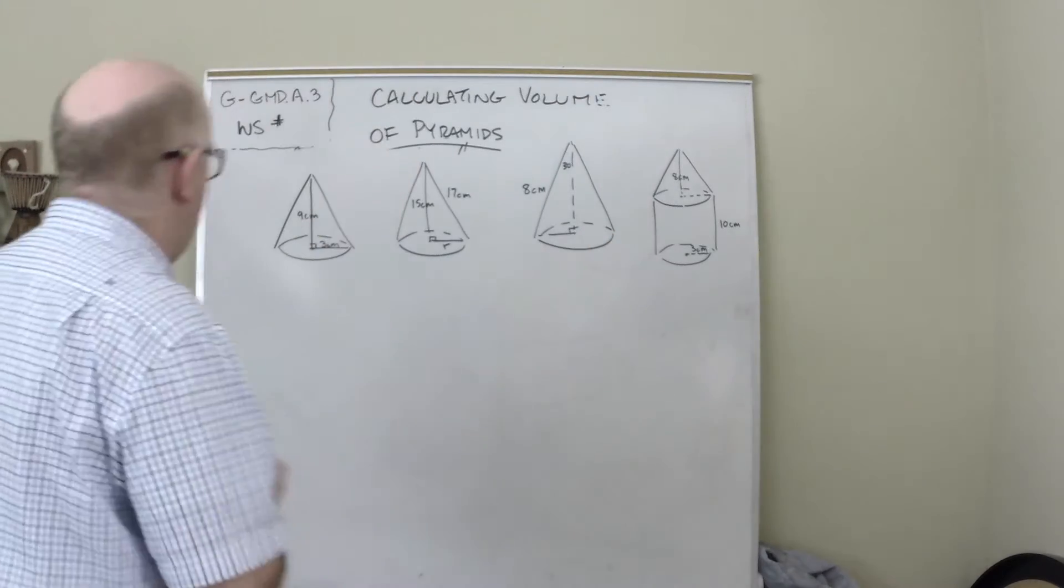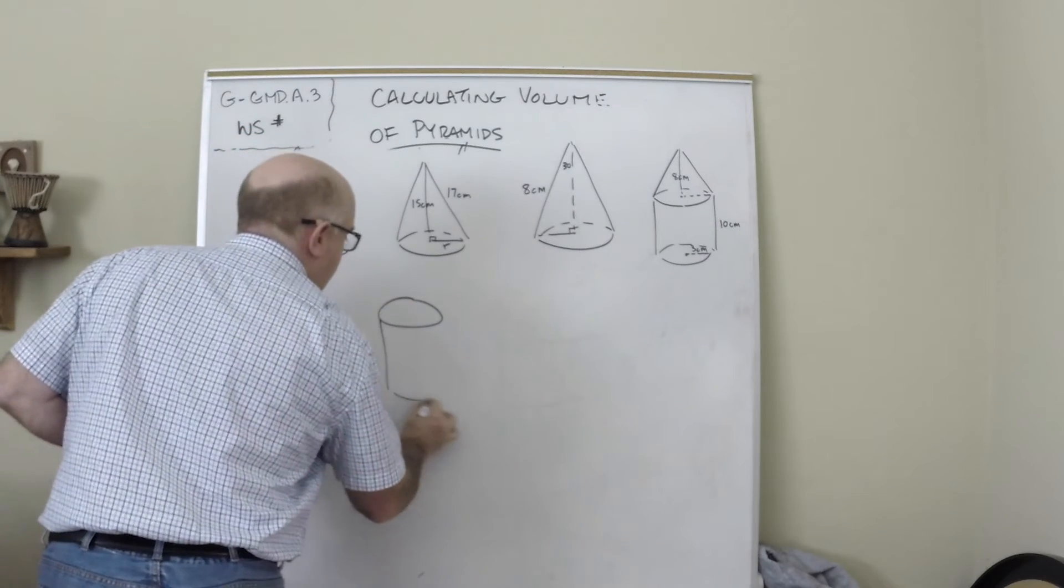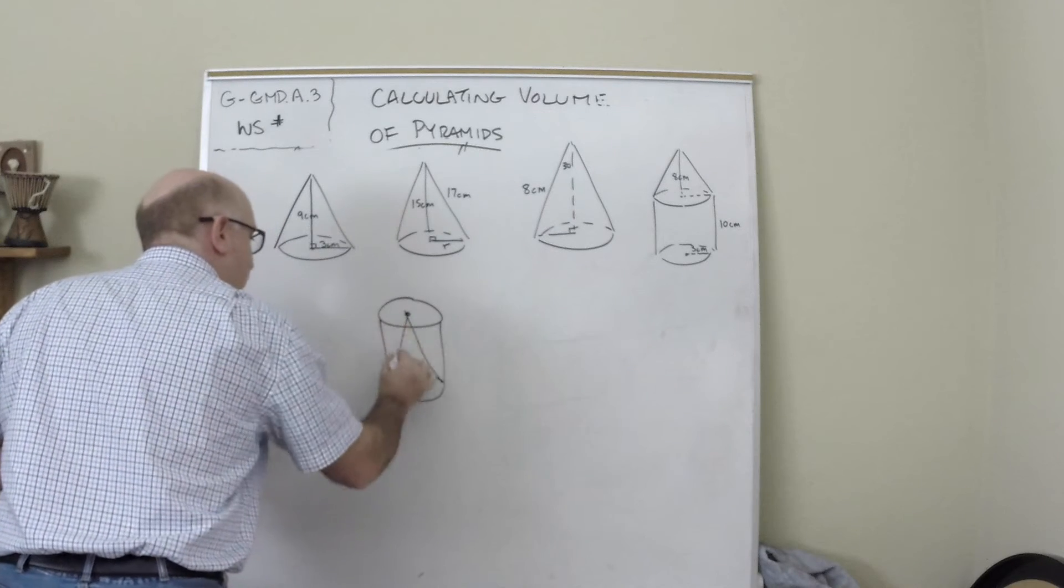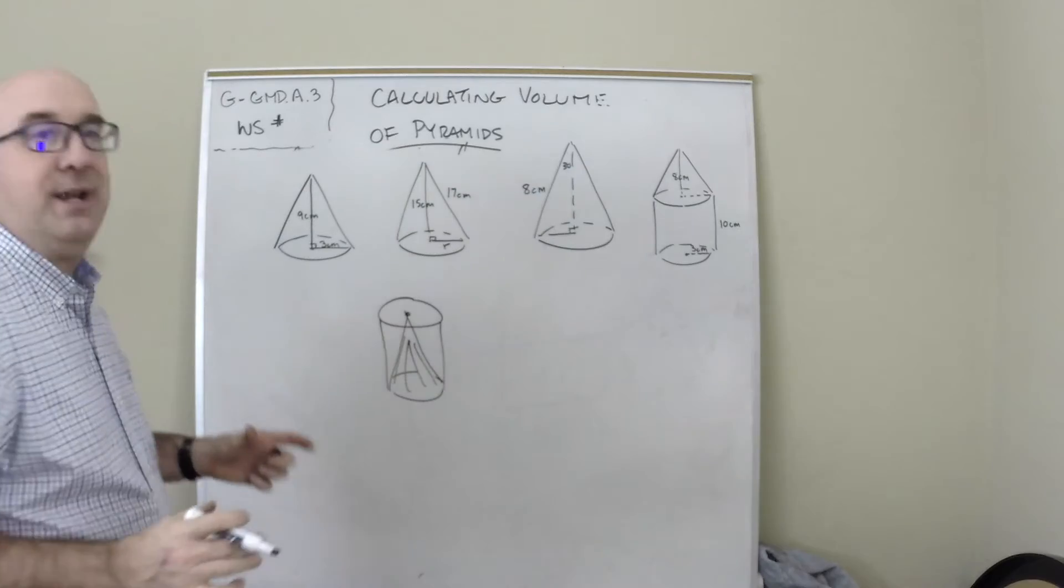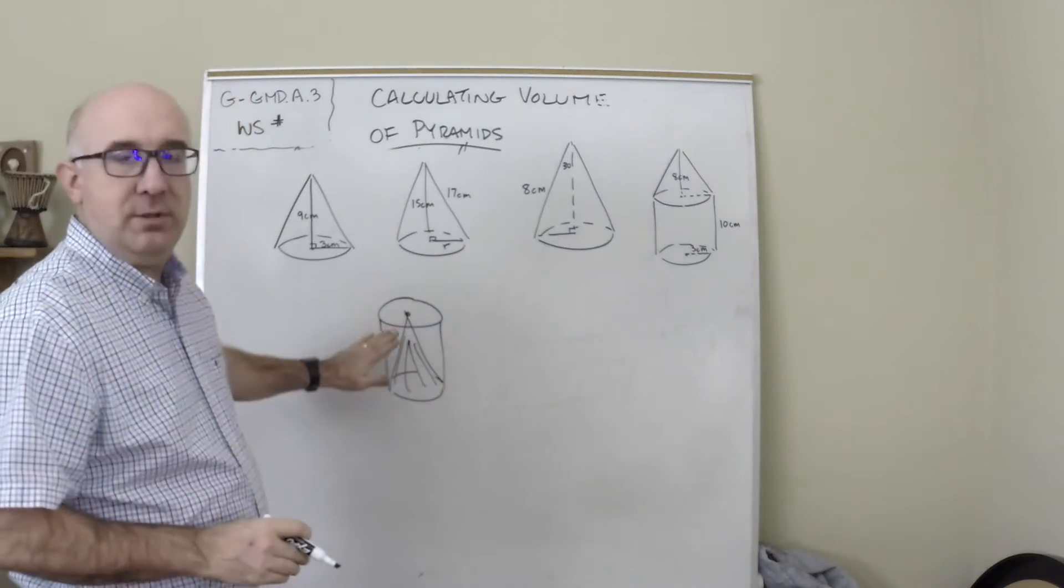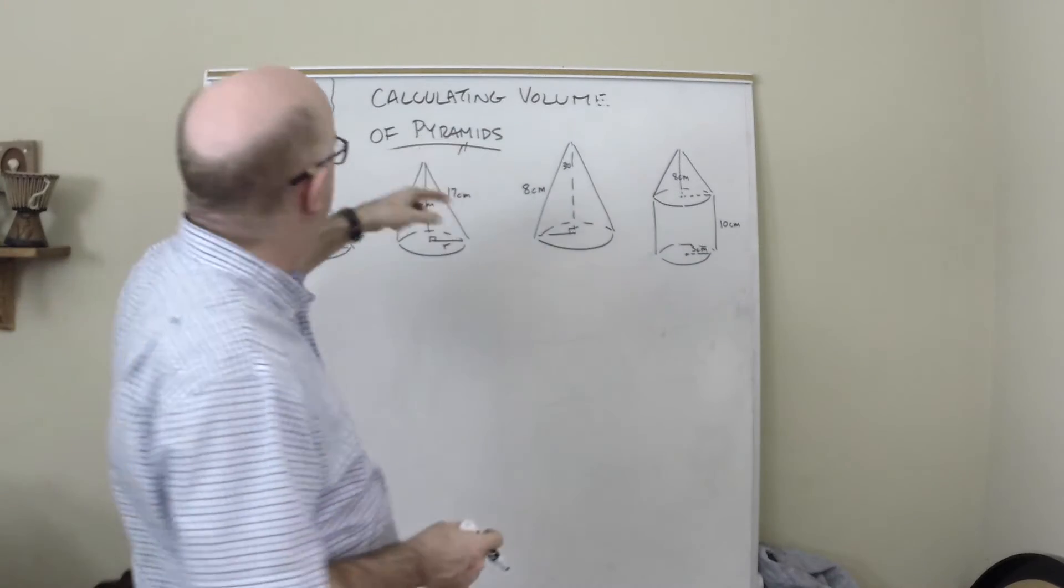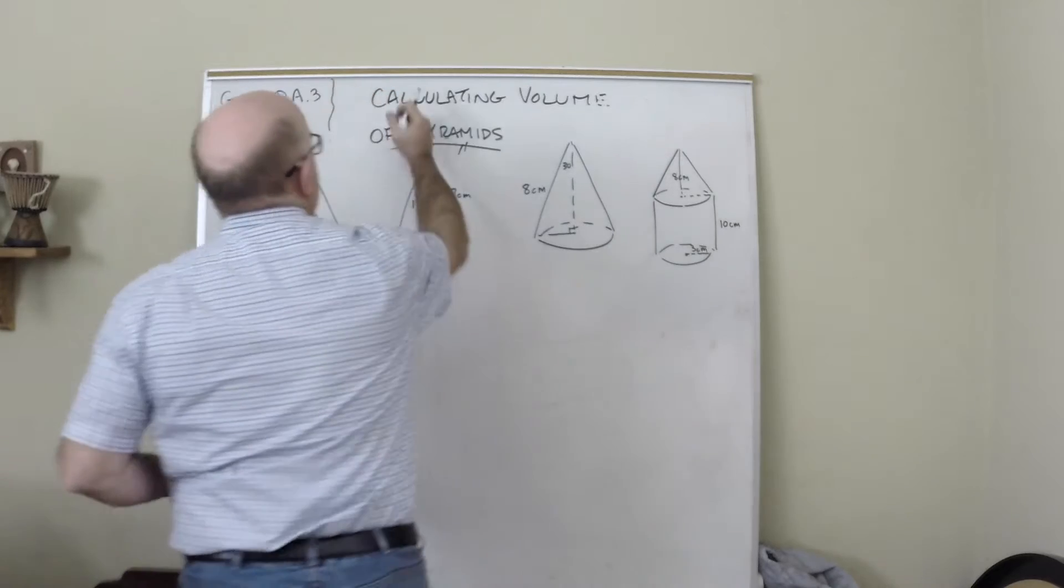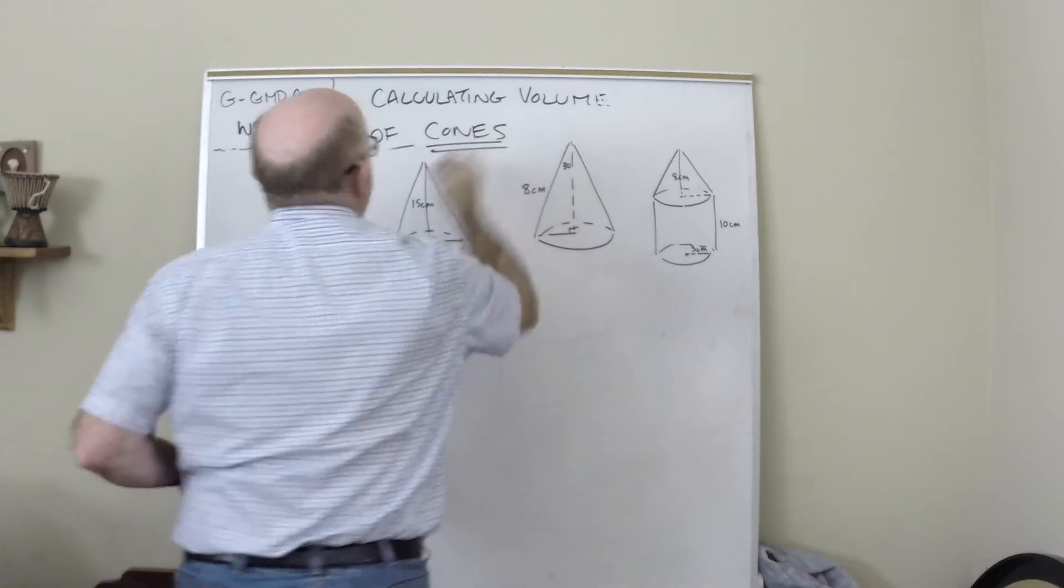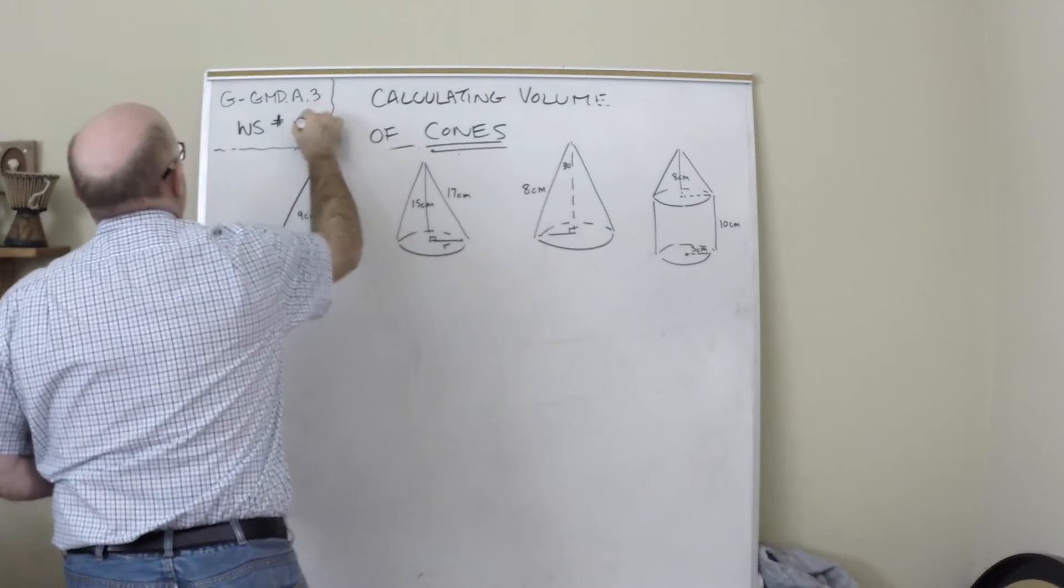The same thing about these guys is they're one-third of their partner's volume. In other words, if I had a cylinder here and I put a cone inside of it, that cone takes up exactly one-third of the volume of that cylinder. So you're going to see me using those values. Oh wait, I didn't change this. Let's change this - this should say cones, calculating volume of cones, and we are on worksheet number five.